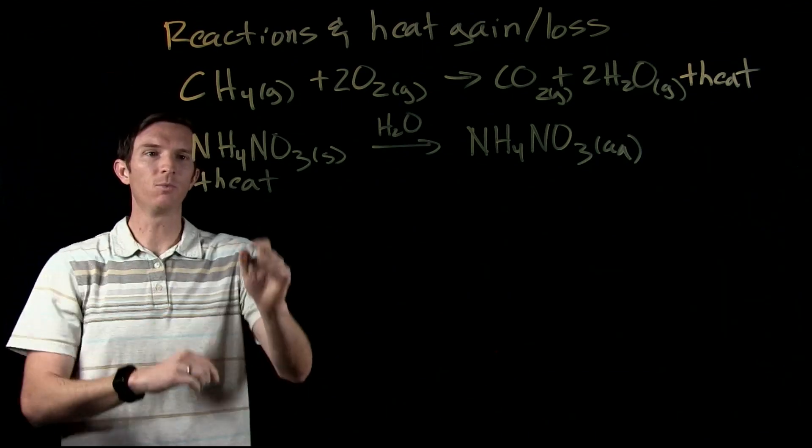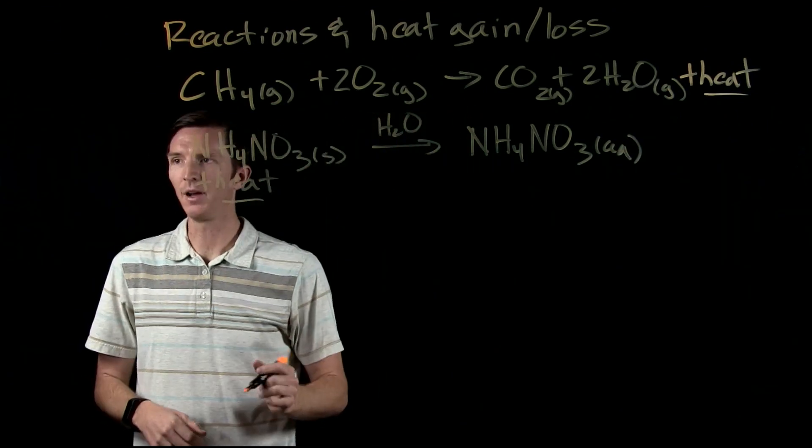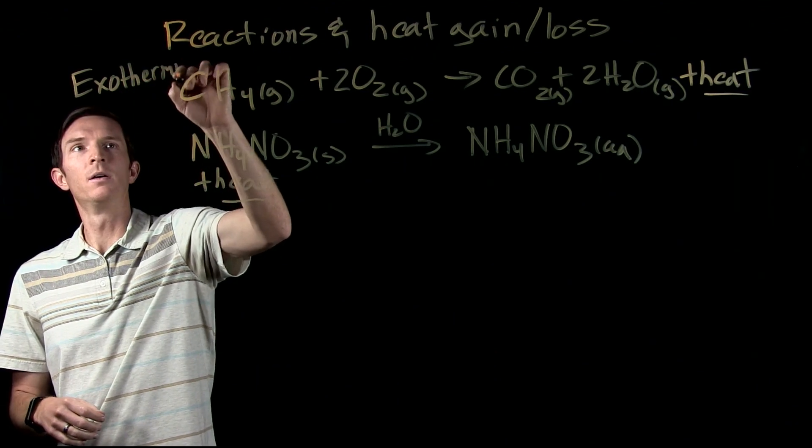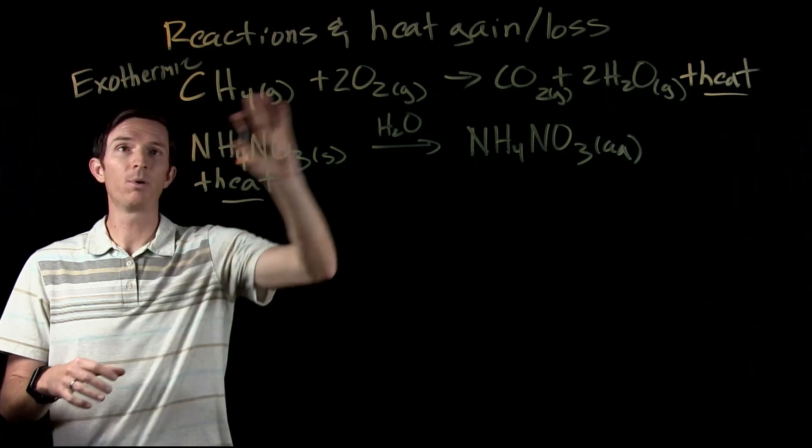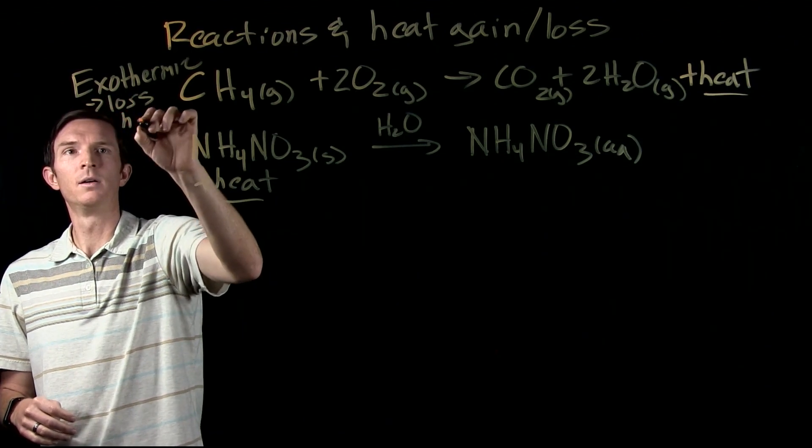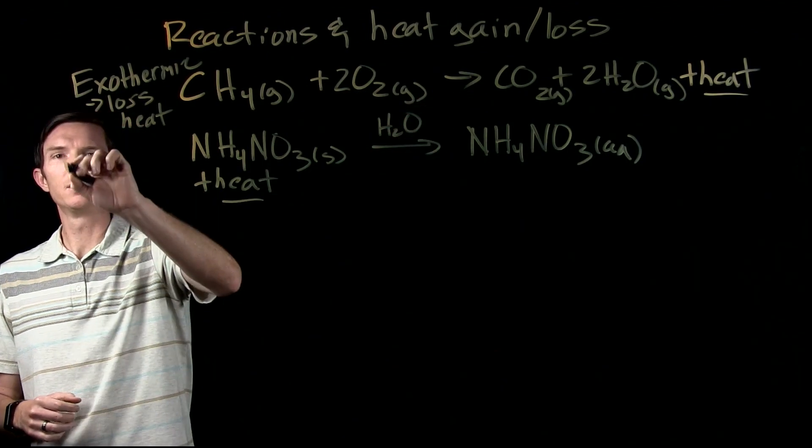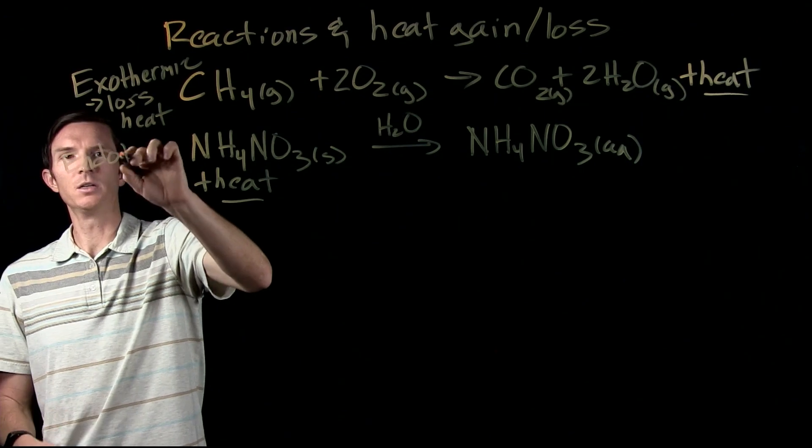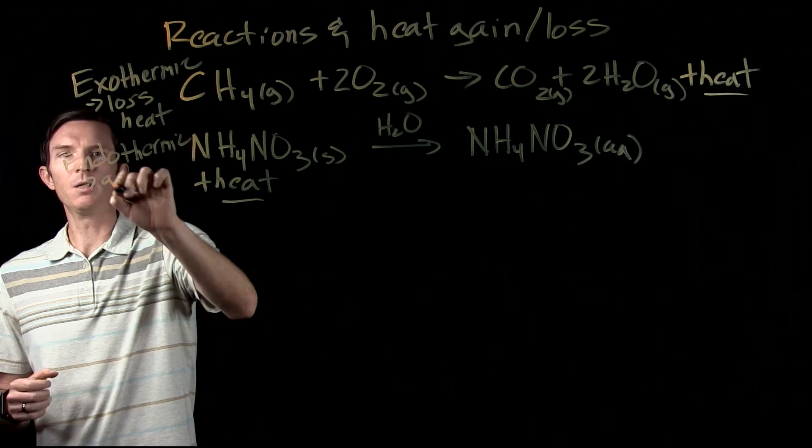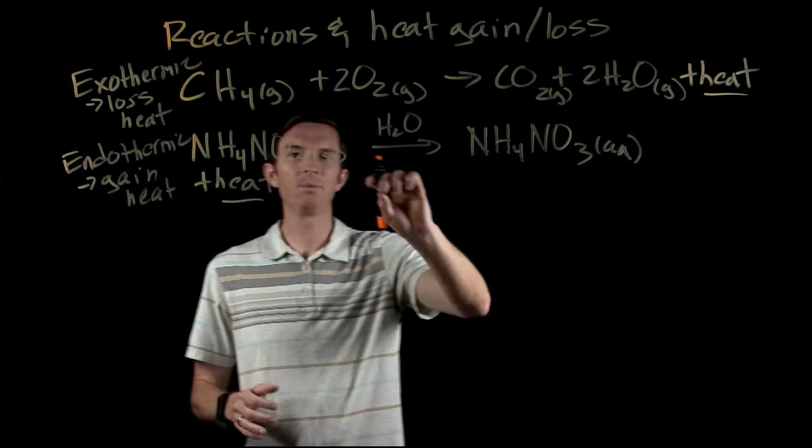We have these two types of reactions. We notice one has heat as a reactant, one has heat as a product. The first one is called an exothermic reaction—it produces heat, so it has a loss of heat and therefore heat is a product. The second is an endothermic reaction—it's absorbing heat, or we can say it gains heat.